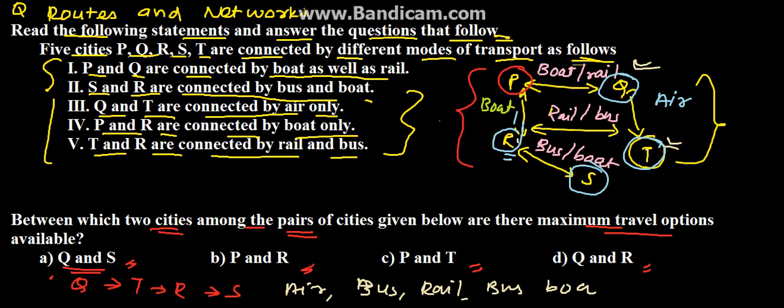for R to S. Therefore we can say that air, rail, bus, and boat, all the options are being covered in Q and S. Therefore option A, that is Q and S, is the solution for the given problem. Thank you.